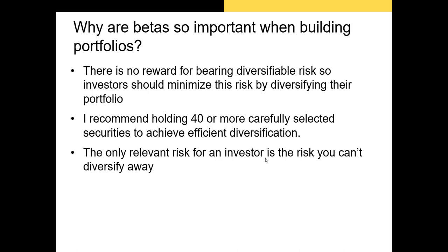I want to reiterate why we care so much about beta when building a portfolio. We're ideally going to be holding at least 25 or 30 different securities, each with correlation coefficients with each other of less than one. Because we have a diversified portfolio, we don't need to worry as much about firm-specific risk. Even if a firm-specific risk event occurred, like Chipotle suffering an E. coli outbreak, the weight of Chipotle in our portfolio is so small that the damage would be relatively minor. Since most of the risk in our portfolio is undiversifiable risk, we need to focus on that.